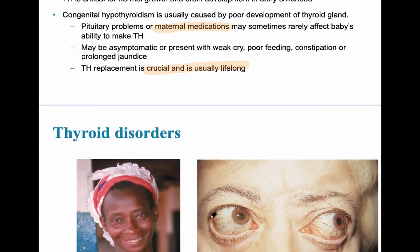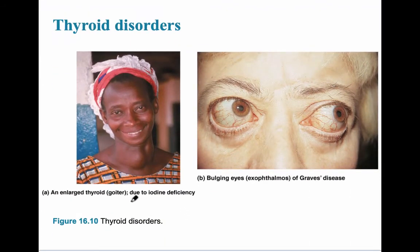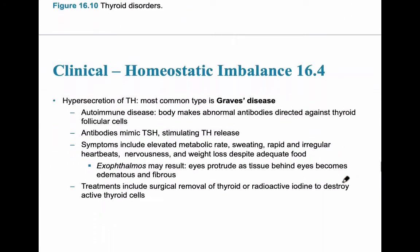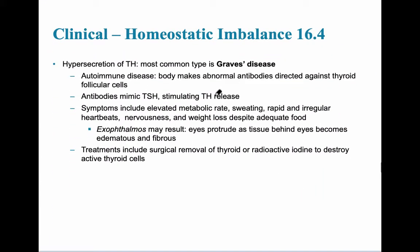The next slide shows examples of thyroid disorders. Image A shows an enlarged thyroid due to iodine deficiency — an example of hypothyroidism — which triggers the feedback loop to increase TSH. On the right, we see exophthalmos due to hypersecretion of T3 and T4 in Graves' disease. Graves' disease is an autoimmune disease where the body produces abnormal antibodies that attack its own follicular cells, causing more and more thyroid hormone to be released, leading to hyperthyroidism.